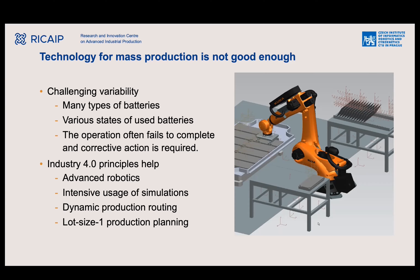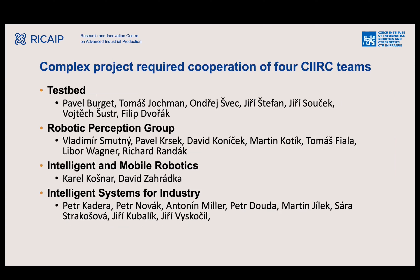We need to design a system that can easily identify and adapt to new battery types coming to market in future years. Also, you don't have control over the quality of the input: you cannot enforce quality standards on used batteries the way you can with contracted suppliers. The system must react to frequent failures and recover in as automated a way as possible. This slide names all four CIIRC groups involved — 24 names in total — so it's great that different parts of CIIRC are collaborating on this project.